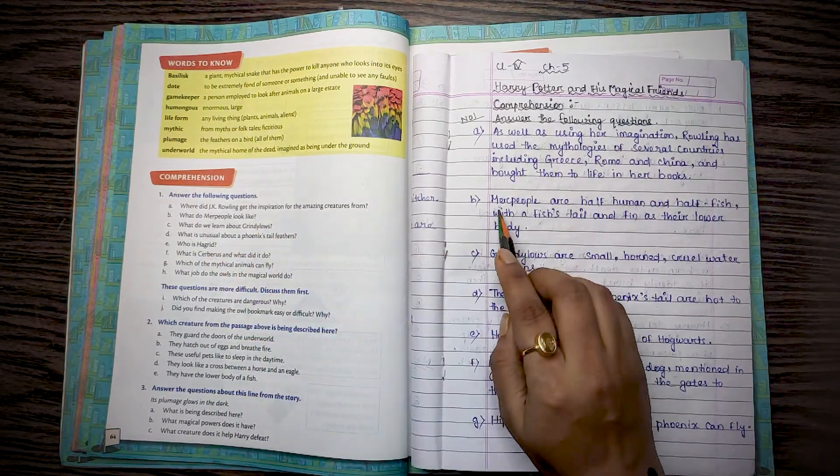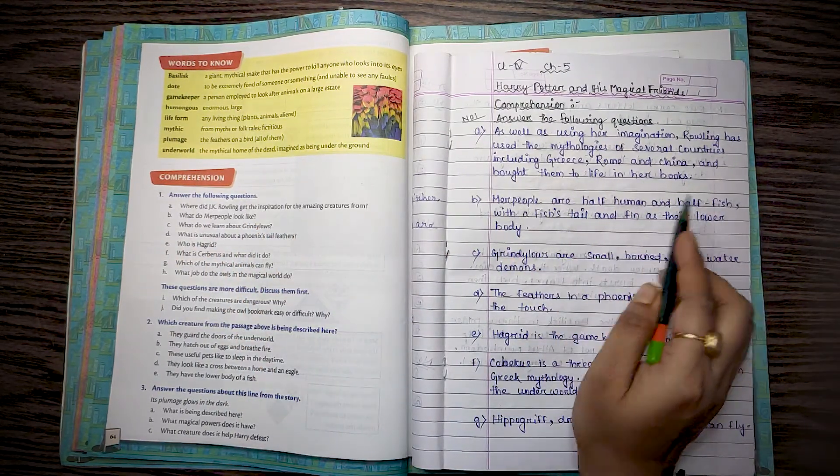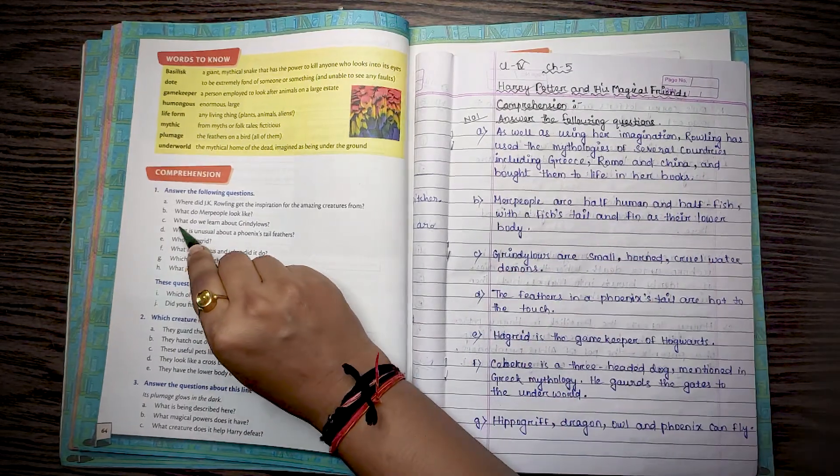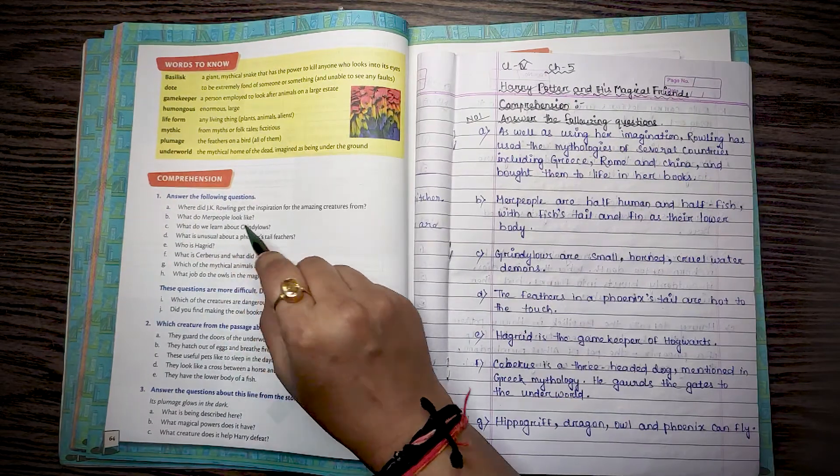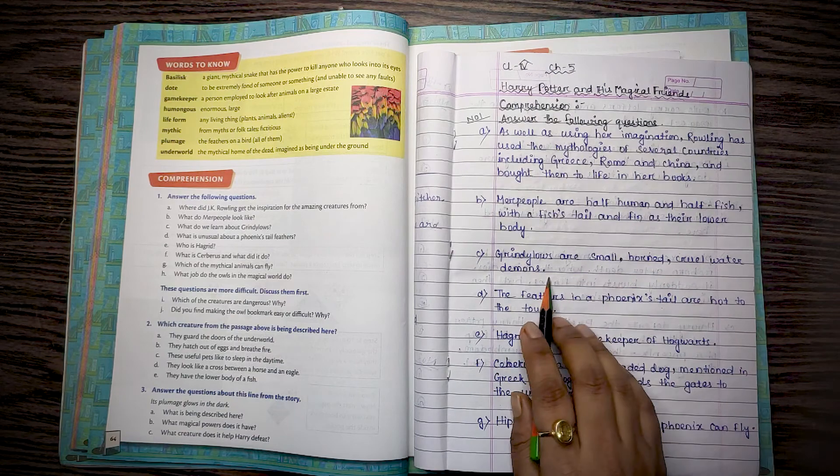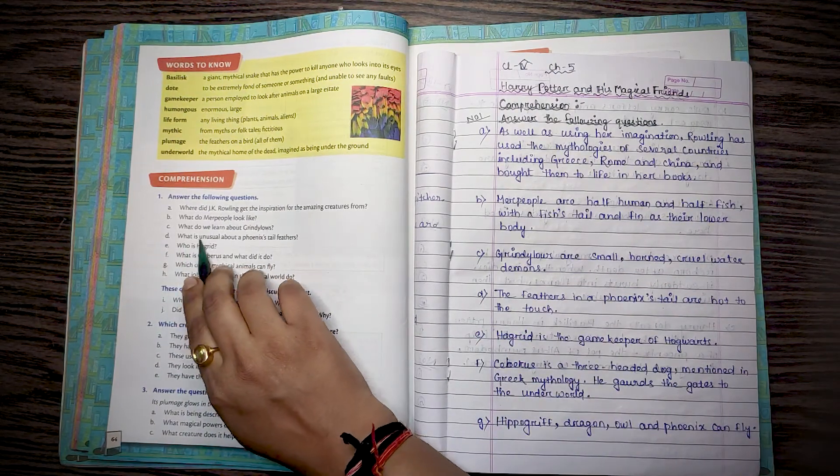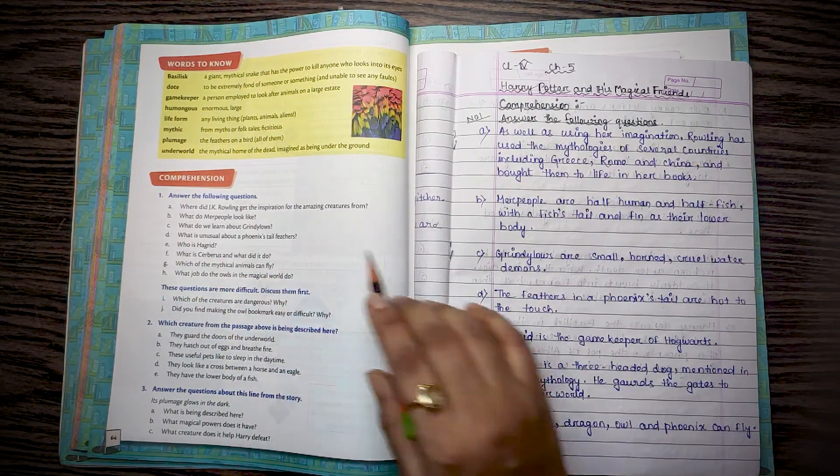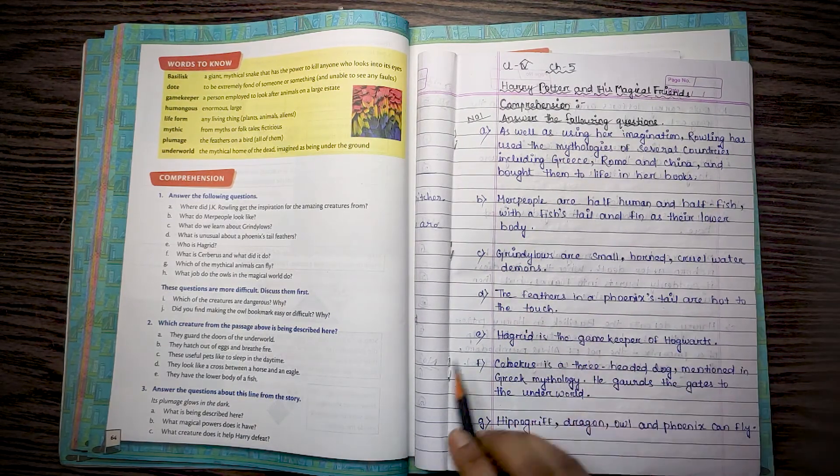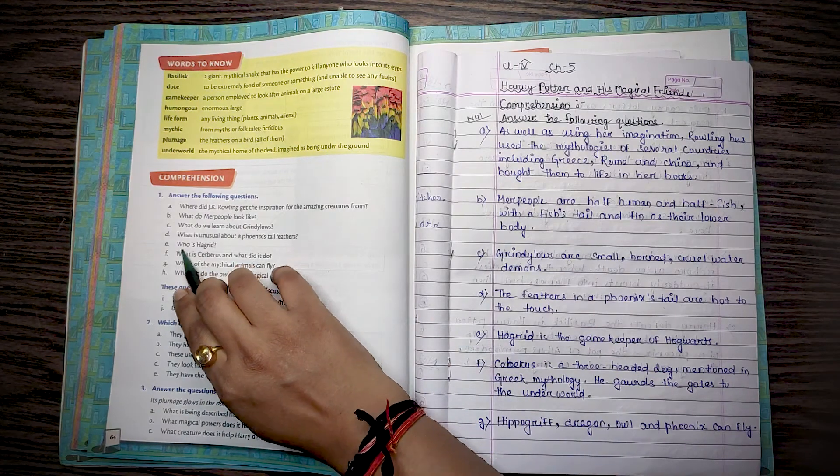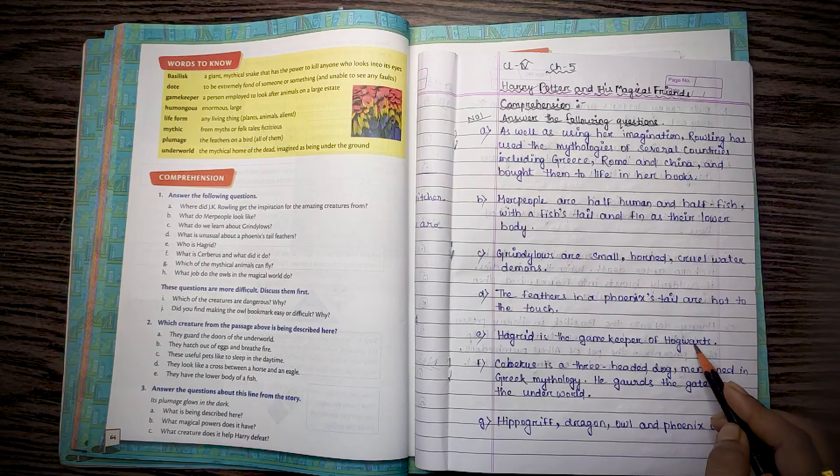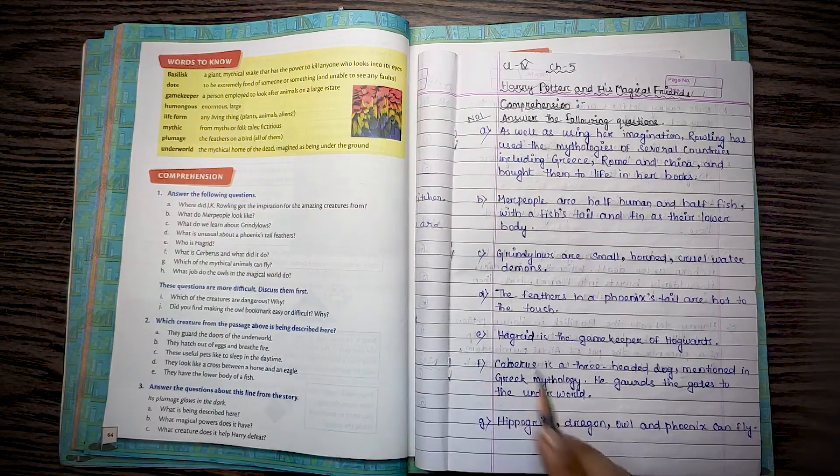Question B: What do merpeople look like? Merpeople are half human and half fish with a fish tail and fins as their lower body. Question C: What do we learn about grindylos? Grindylos are small horned cruel water demons. Question D: What is unusual about the phoenix tail feather? The feathers in the phoenix tail are hot to touch. Question E: Who is Hagrid? Hagrid is the gamekeeper of Hogwarts.